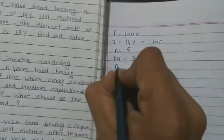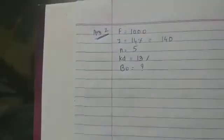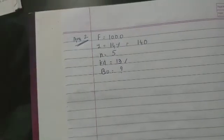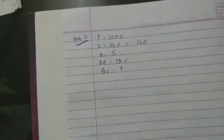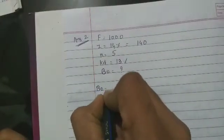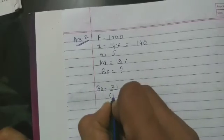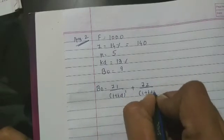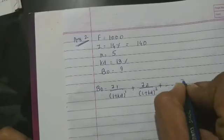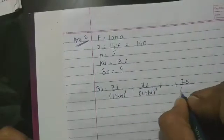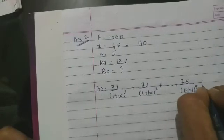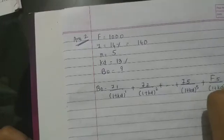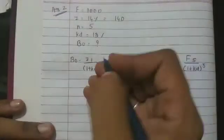The discount rate of this bond is 13 percent, so Kd = 13 percent. Find out the value of the bond. Simple. Starting with the long cut method, then we will do only one method. B0 is what? i1 / (1 + Kd)^1 + i2 / (1 + Kd)^2 plus up to iN / (1 + Kd)^N plus the face value.